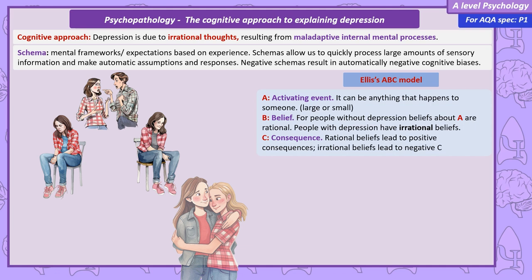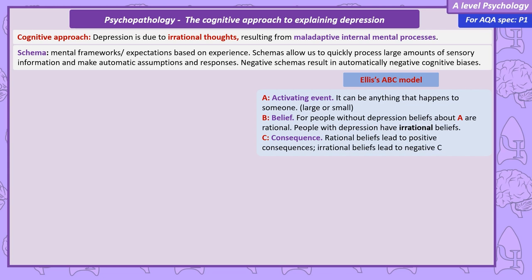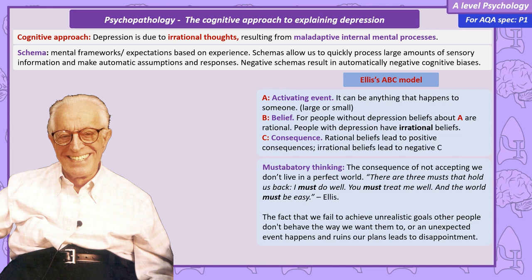Ellis also uses an amusing-sounding term that explains the source of irrational beliefs: musterbatory thinking. It's a problem that comes from not accepting that we don't live in a perfect world. A quote from Ellis is: 'There are three musts that hold us back — I must do well, you must treat me well, and the world must be easy.' You can see those beliefs result in a lot of pressure, and we'll certainly be disappointed when we fail to achieve an unrealistic goal, other people don't behave the way we want them to, or an unexpected event happens and ruins our plans.